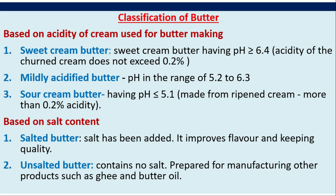Classification of butter based on acidity of cream: sweet cream butter has a pH ≥ 6.4 and acidity of churned cream not exceeding 0.2%; mildly acidified butter has a pH in the range of 5.2 to 6.3; and sour cream butter has a pH ≥ 5.1, usually made from ripened cream with more than 0.2% acidity.